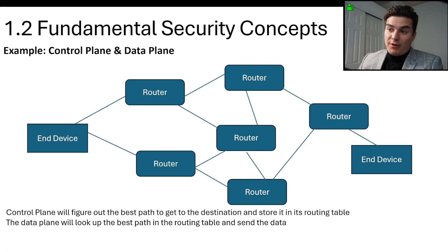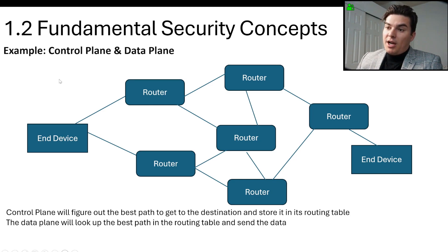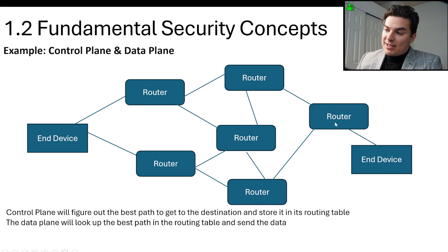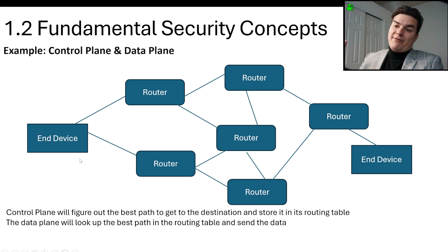Here's an example of the control plane and data plane. An end device wants to communicate with another end device. The control plane figures out the best path — such as using OSPF — since links can be at different speeds, it wants to take the fastest route. Once the fastest route is found, the end device stores that configuration as the path to get there.